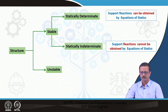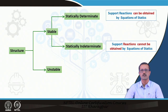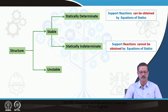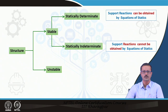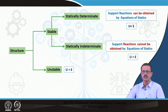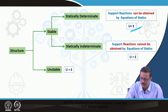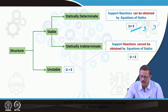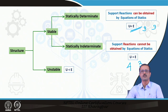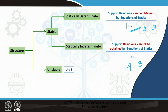Statically determinate structures: support reactions can be obtained by the equations of statics. When there are 4 unknowns and only 3 equations, one more equation is needed using compatibility conditions — those structures are statically indeterminate. If unknowns = equations (e.g., 3 = 3), it is determinate. If unknowns > equations, it is indeterminate. If equations > unknowns, the structure is unstable.